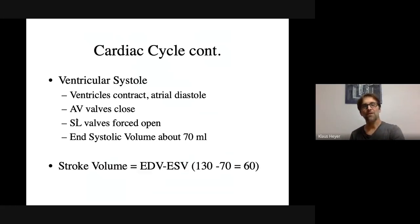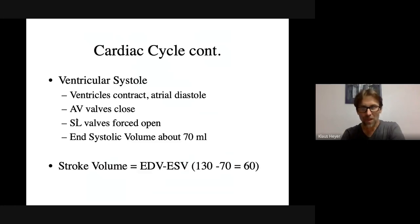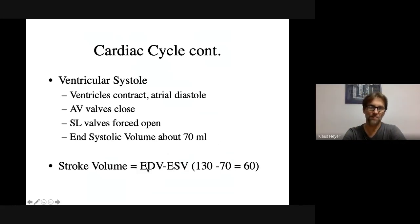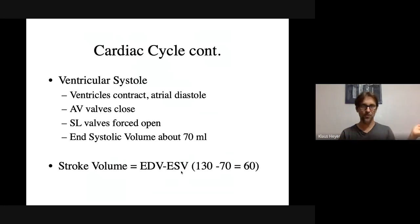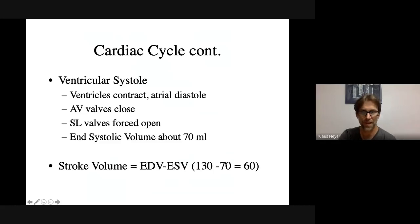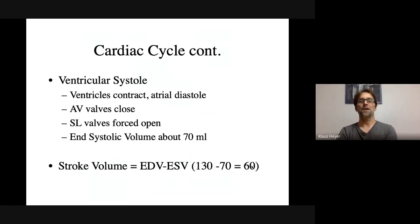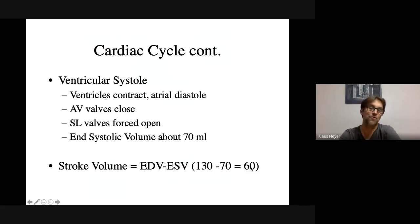If we have these two numbers, we can figure out stroke volume. Stroke volume is how much blood the heart is pumping out every time it beats. We look at how much blood was in the ventricles when they were relaxed — that's end diastolic volume — then how much blood is left after contraction — end systolic volume — subtract them, and you get stroke volume. In this case it would be around 60 to 70 milliliters.